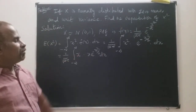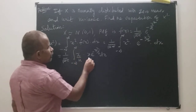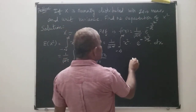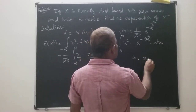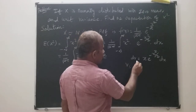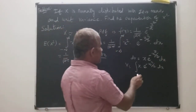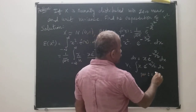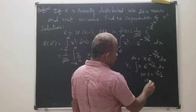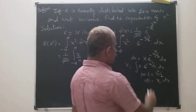Now we have to integrate this by using integration by parts. I can take u = x and dv = x into e to the power minus x squared by 2 into dx.